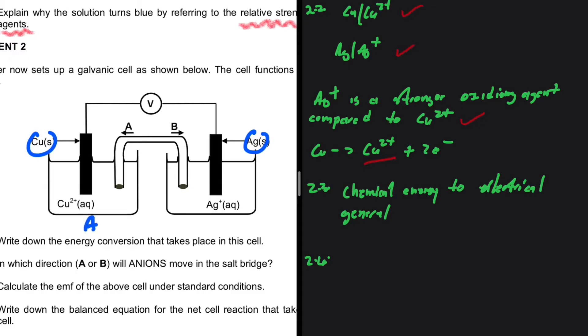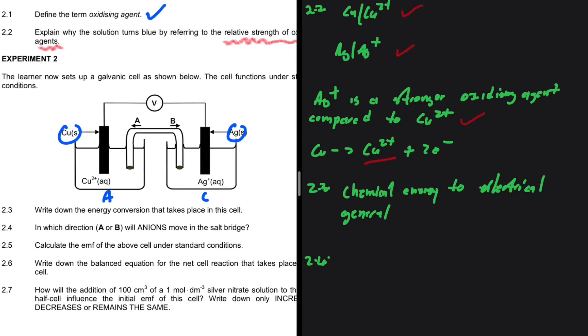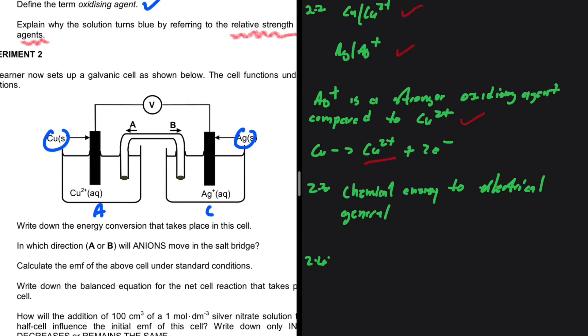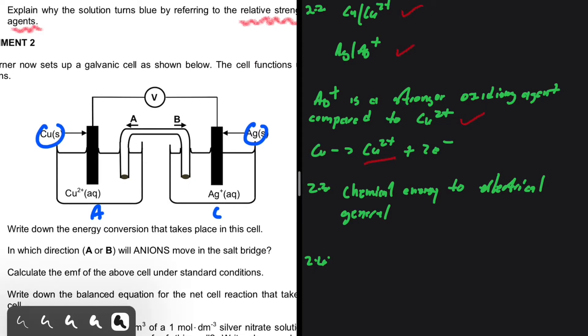Now we can answer 2.4: in which direction, A or B, will anions move in the salt bridge? Anions move towards the anode and cations move towards the cathode. It is easy to see that the anions are moving towards A.